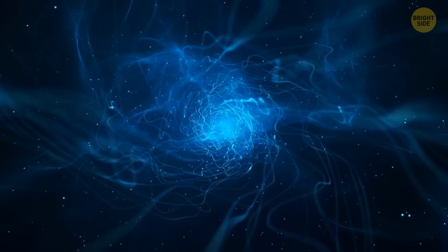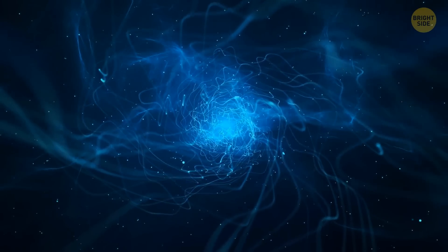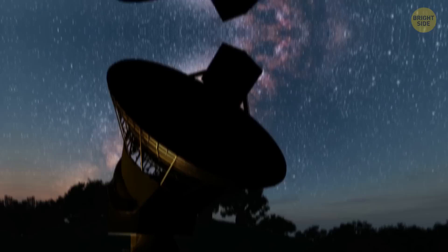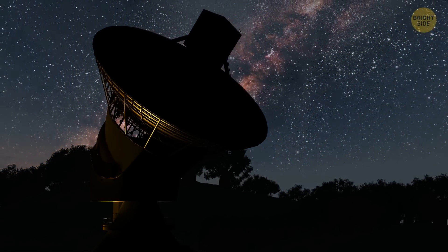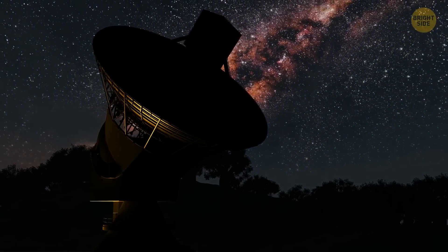But the filaments aren't the only unexpected and bizarre phenomenon in the solar system. Some time ago, Australian researchers discovered a weird spinning object in the Milky Way. And it was unlike anything they'd seen before.